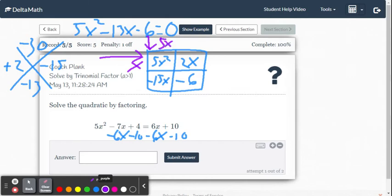All right, double check yourself. 5x times x will give you 5x squared. Yes, it does. All right, x times what is 2x? 2. 5x times what is negative 15x? Negative 3.